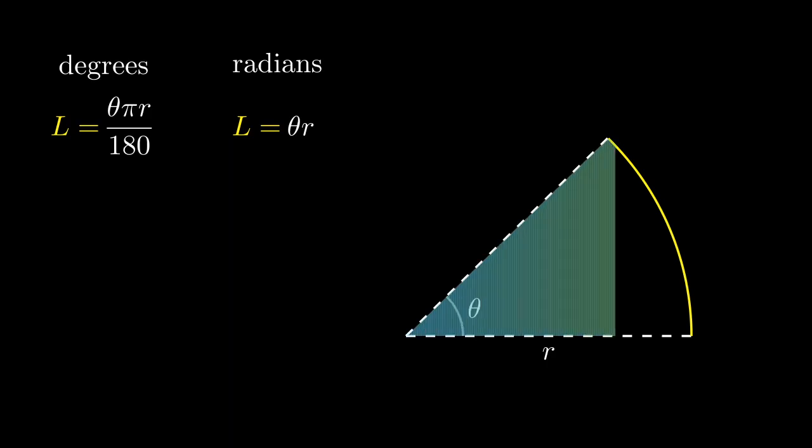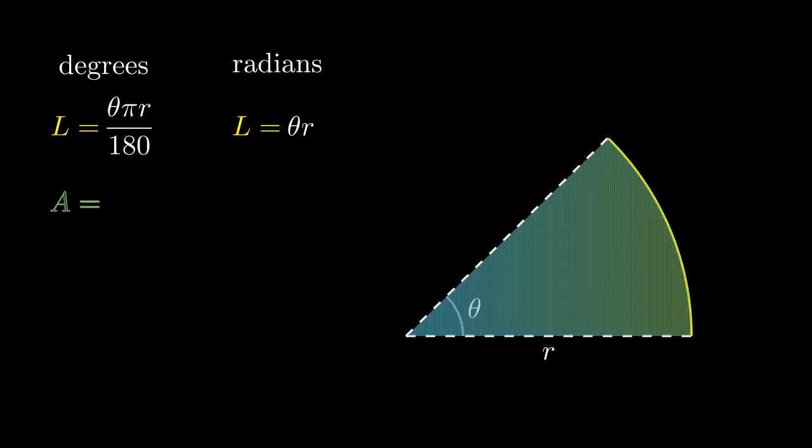Similarly, if we're looking at the area of this pie slice, often called a sector, in degrees the formula is this mess. But in radians, the formula is as simple as 1/2 θ r².